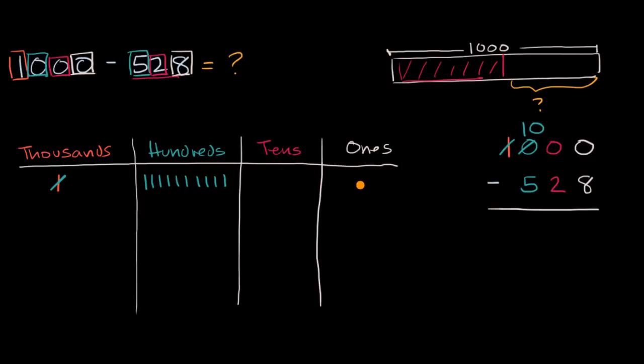And so what I could do is I could break up one of these hundreds into 10 tens. So I'm going to take that one away, and then that 100 is 10 tens: 1, 2, 3, 4, 5, 6, 7, 8, 9, 10. And if I did that here, well if I take away one of the hundreds, I'm now going to have 9 hundreds left. But now I have 10 tens.